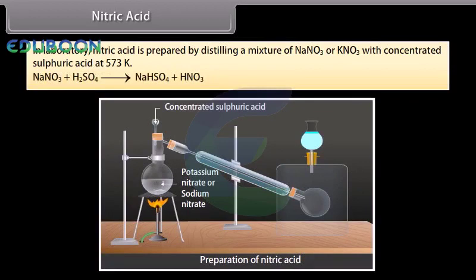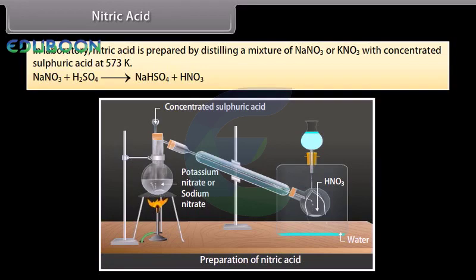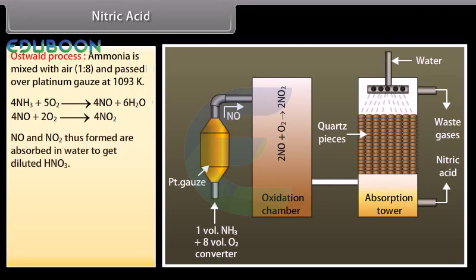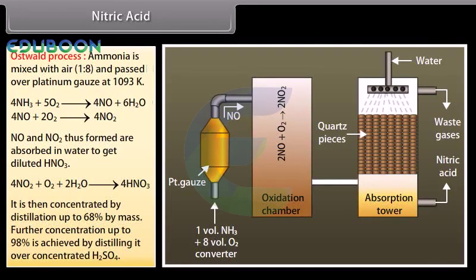In the laboratory, nitric acid is prepared by distilling a mixture of NaNO3 or KNO3 with concentrated sulfuric acid at 573 K. On a large scale, nitric acid is manufactured by the Ostwald process. In the Ostwald process, ammonia is mixed with air in a 1:8 ratio and passed over platinum gauze at 1093 K. The NO and NO2 thus formed are absorbed in water to give dilute HNO3. It is then concentrated by distillation up to 68% by mass; further concentration up to 98% is achieved by distilling over concentrated H2SO4.